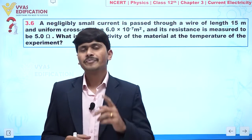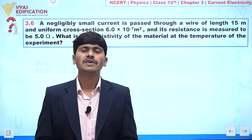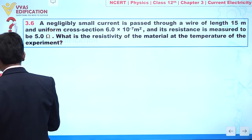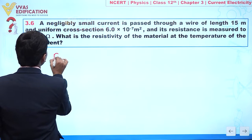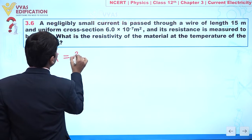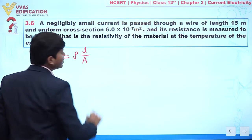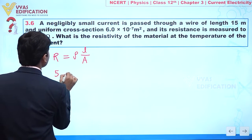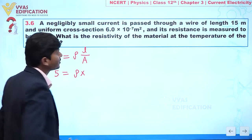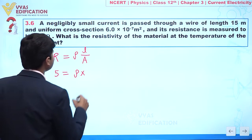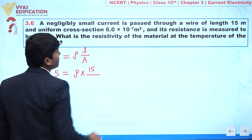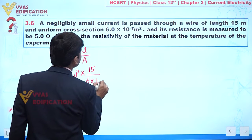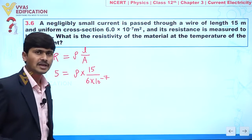We know the relationship between resistance and resistivity: R = ρL/A. In this question, the value of R is 5 ohm, resistivity ρ is our objective, the length of the wire is 15 meters, and the cross-sectional area is 6 × 10⁻⁷ m².